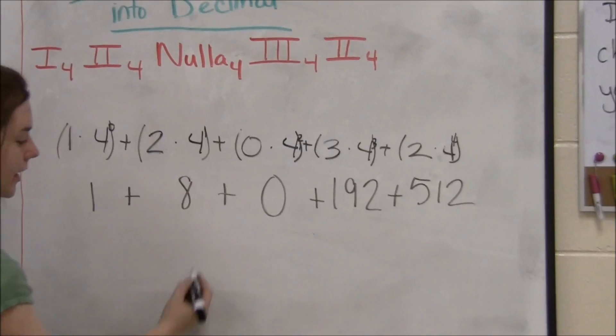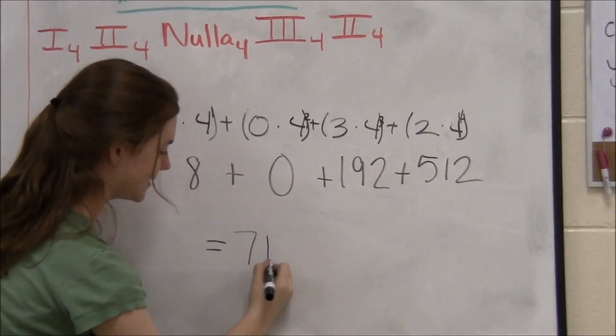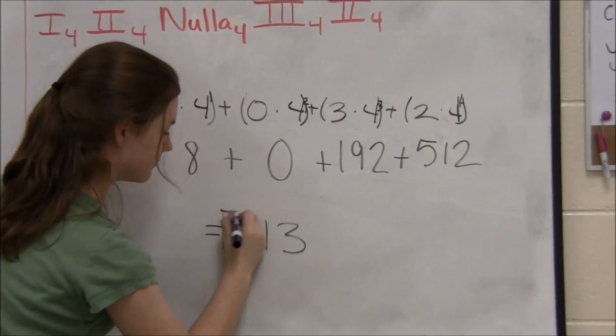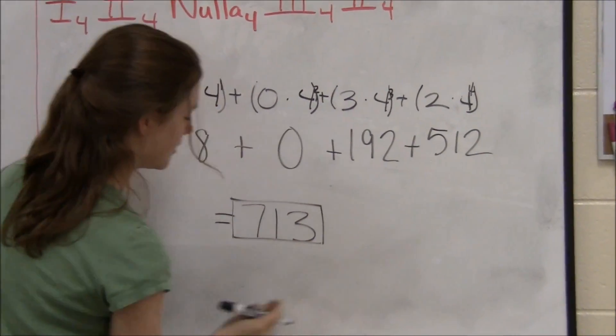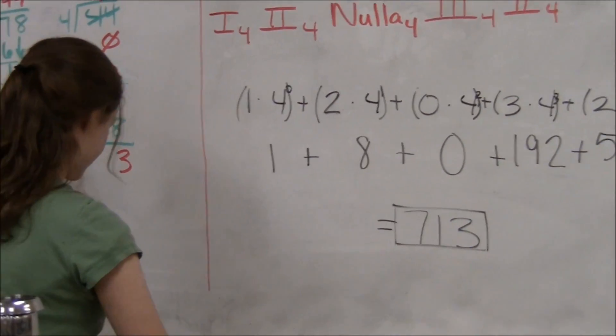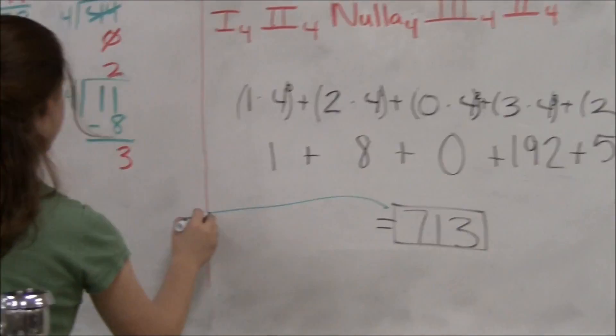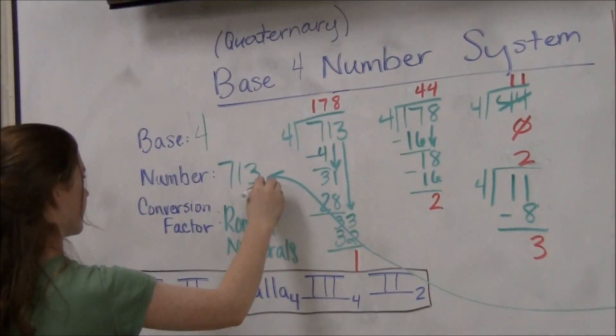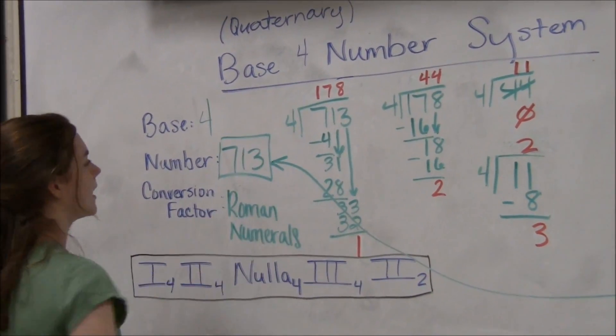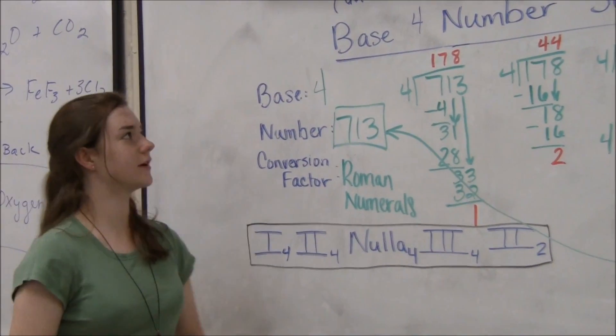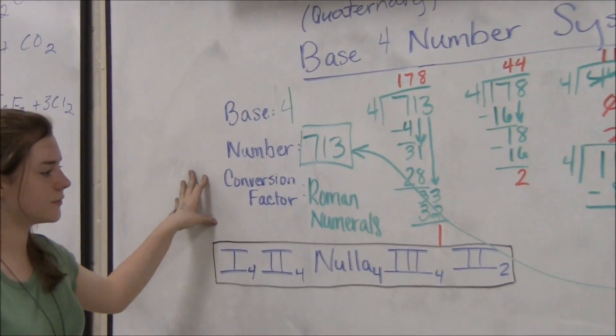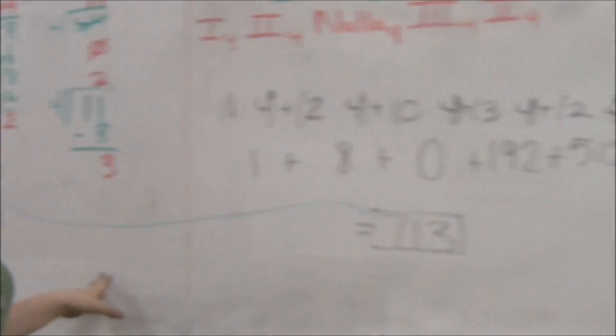When we do that, we get the number 713, which correlates to our original number in decimal format. And that is how you convert from decimal to quaternary form back to decimal.